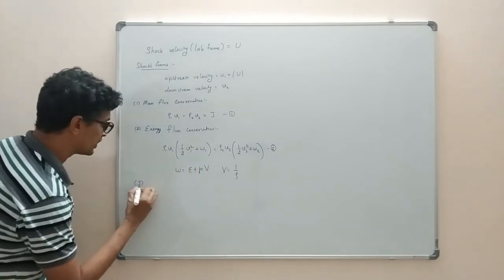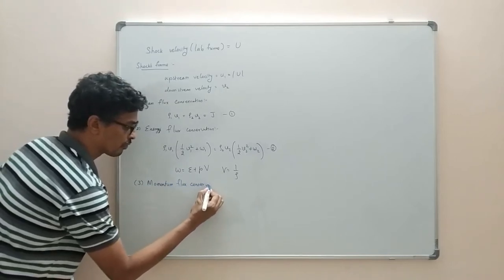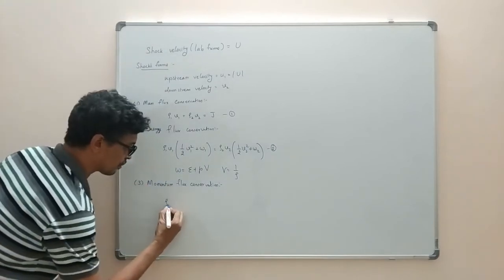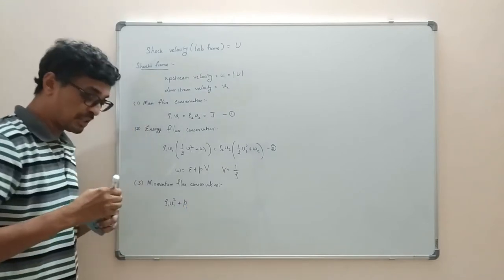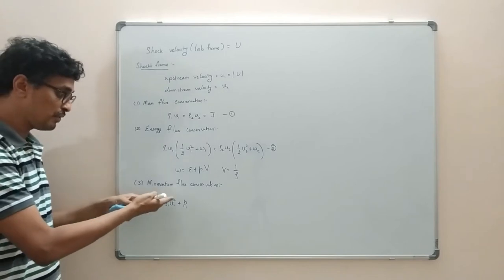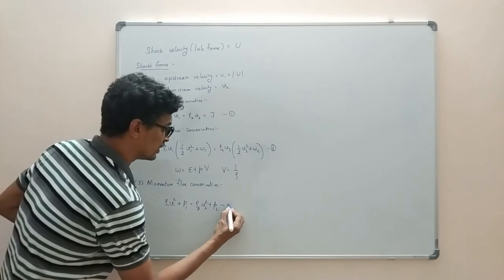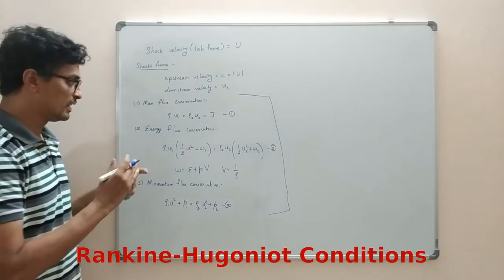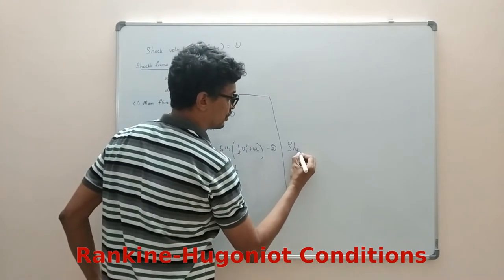The third and last condition is momentum flux conservation. Momentum flux is ρv², and pressure also contributes since pressure equals force per unit area, which dimensionally equals momentum flux. So: ρ₁v₁² + p₁ = ρ₂v₂² + p₂. These three conditions — mass flux, energy flux, and momentum flux conservation — connect the thermodynamic conditions on both sides of the shock front, and are called the shock jump conditions.